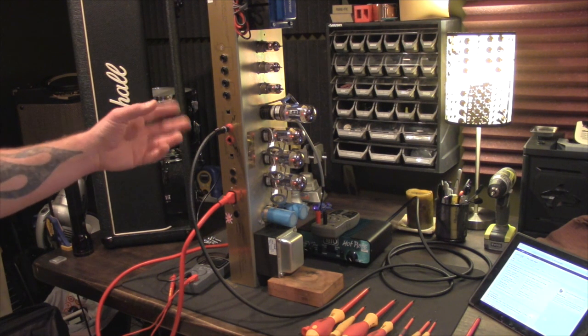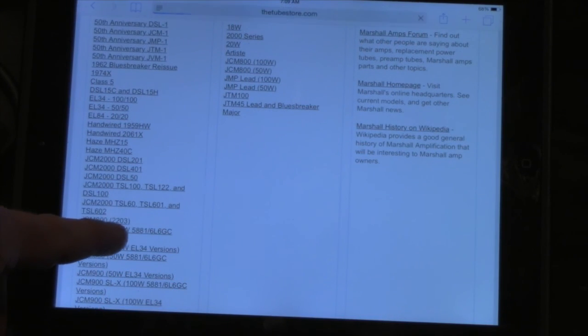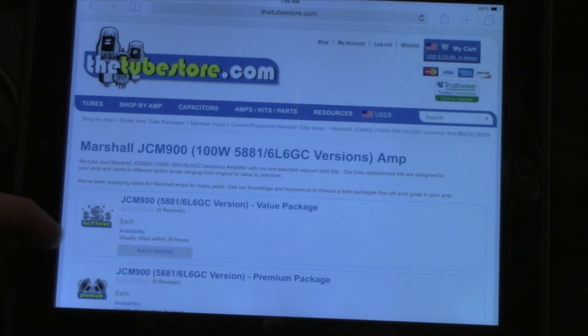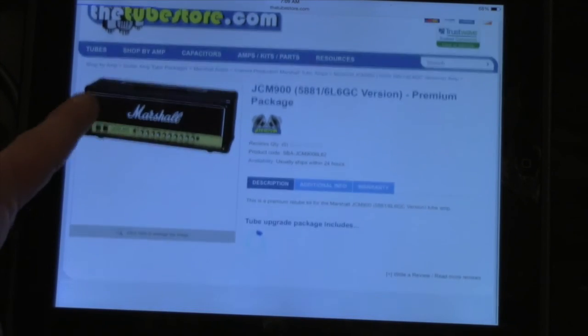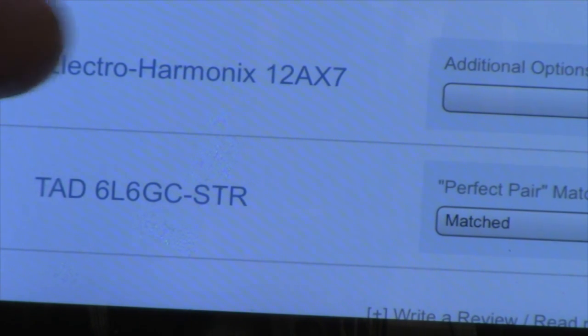Their recommended package on their website is four of the TAD 6L6GCs. Again, this is the 100-watt 5881 model JCM-900.